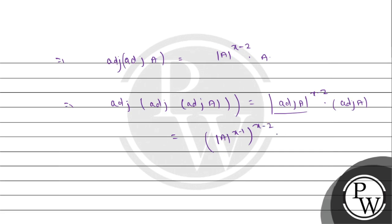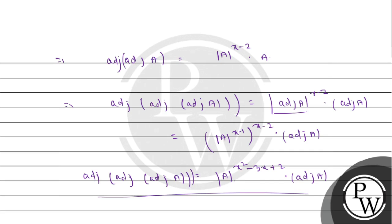Therefore, the whole power x minus is equal to A, and the adjoint of A. So this gives us determinant of A to the power x squared minus x, and adjoint of adjoint of A shows the values in terms of determinant of degree x squared minus x squared, then adjoint of A. So the correct option is one of our options.